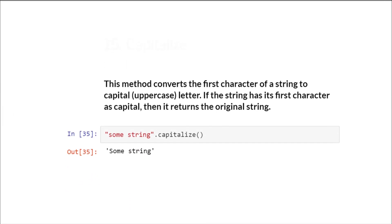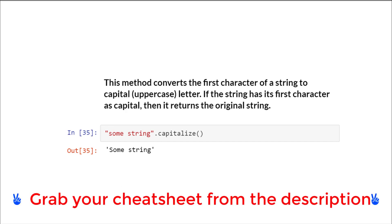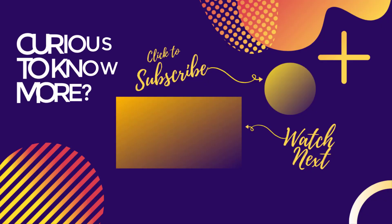Last but not least we have the capitalize method. This method converts the first character of the string to uppercase. If the string already has its first character as capital, it returns the original string. For example, the capitalized output has 'S' in uppercase whereas in the original string it is not. That's all for this lecture — see you in the next one, thank you.